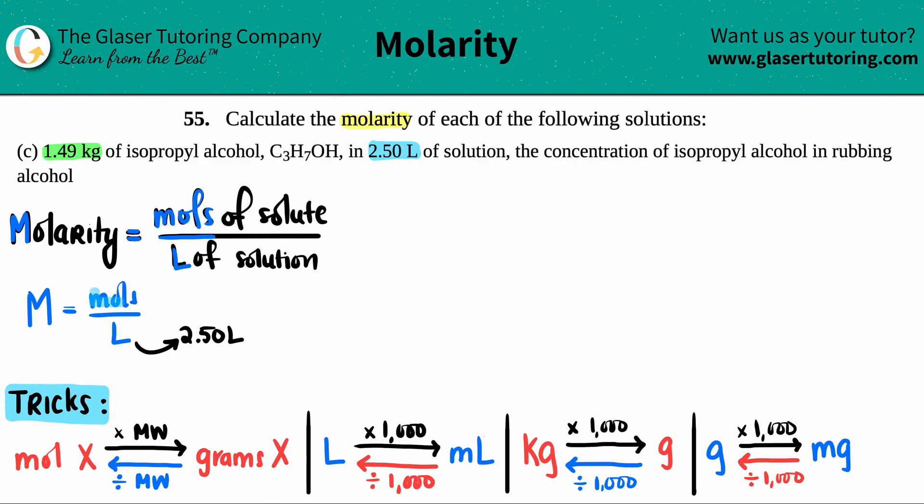But I don't know the mole value. They didn't tell me this number, so I first have to convert. I have to convert the 1.49 kilograms of isopropyl alcohol, which is C3H7OH, and I have to convert that into moles of C3H7OH. However, there's a little catch here.